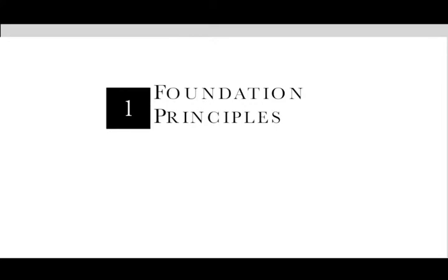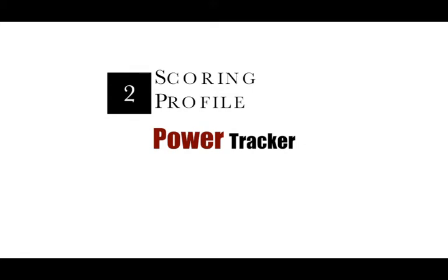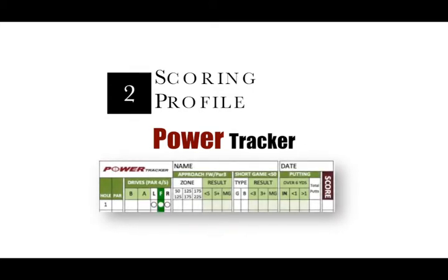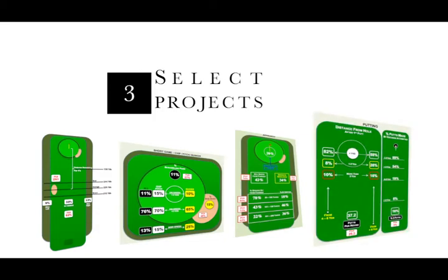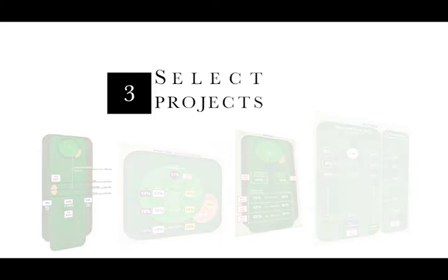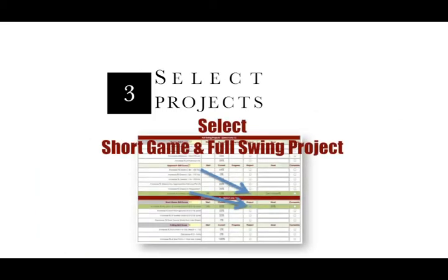In Section 1, you will begin to develop your knowledge base with a review of the OnTarget Foundation principles. Next, you will develop your scoring profile by using OnTarget's proprietary shot tracking system called PowerTracker to collect statistical data on your driving, approach, short game, and putting. Next, you will learn how to analyze your statistics and ranking reports and identify your strengths and weaknesses, and from those areas impacting your score the most, you will select one short game and one full swing project to work on.